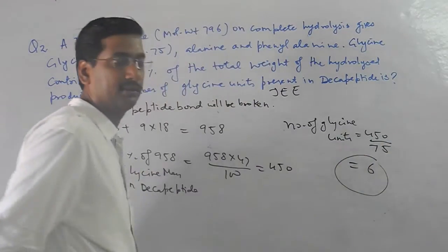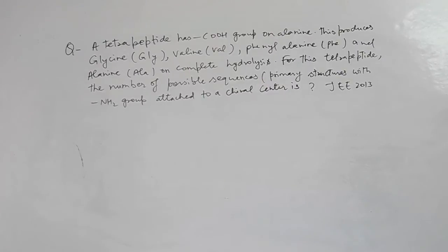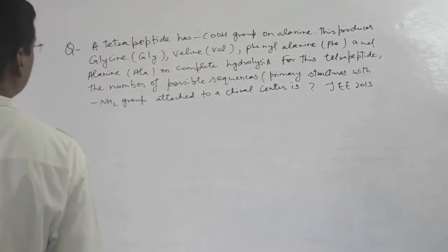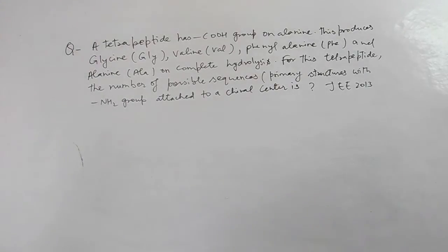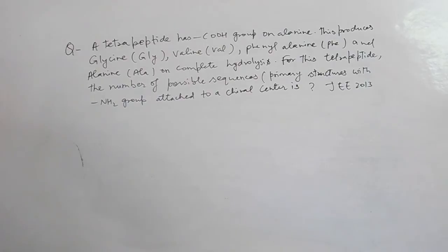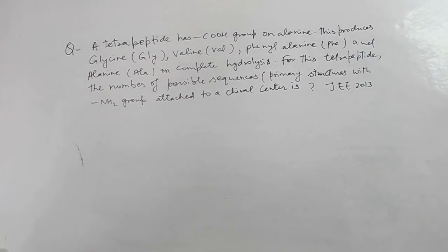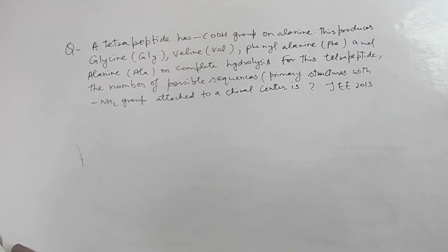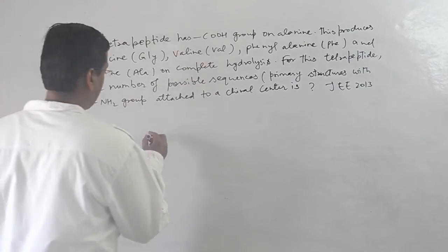This is a tetrapeptide with a COOH group on alanine, producing glycine, alanine, and alanine — a total of 4 amino acids. For this tetrapeptide, the number of possible sequences: with glycine and just two amino acids, you need to know that the COOH group is your C-terminus.